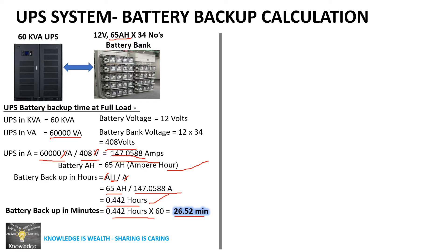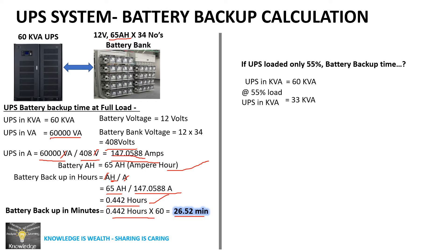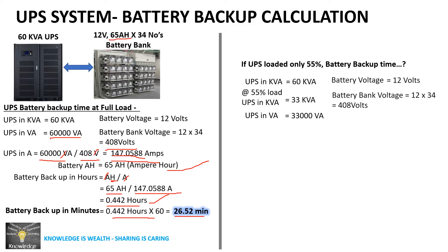So a 60 kVA UPS at full load, connected to a 65 Ah, 34-battery bank, will give around 27 minutes of backup. Now, what if this UPS is loaded at only 55 percent? The capacity is 60 kVA and 55 percent of that is 33 kVA, which is 33,000 volt-ampere. The battery bank voltage remains 12 × 34 = 408 volts.